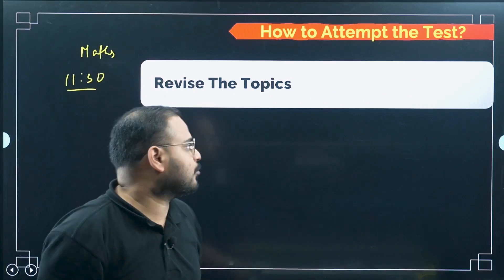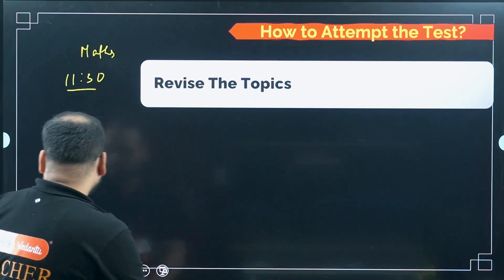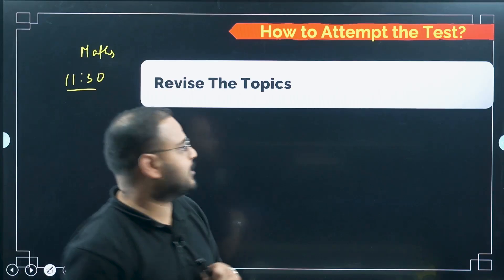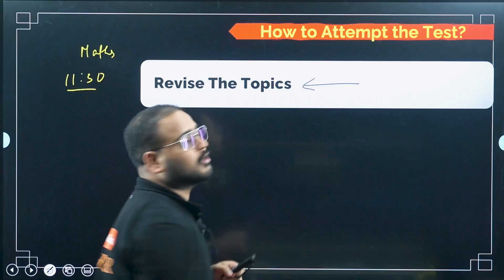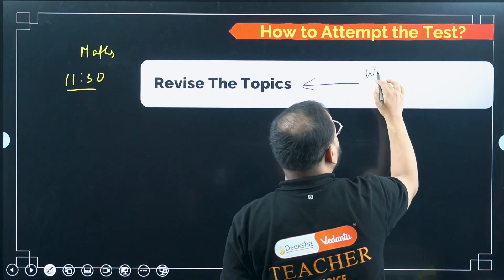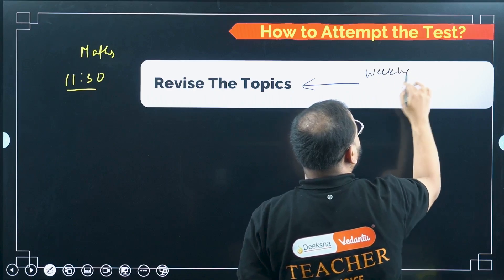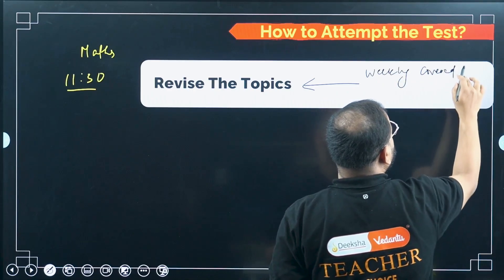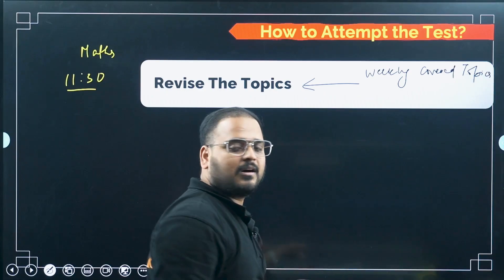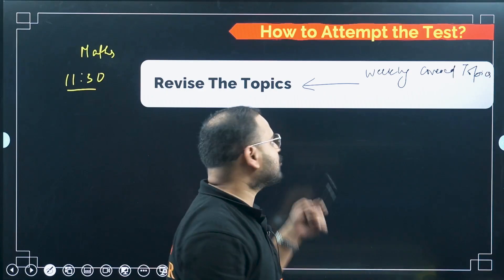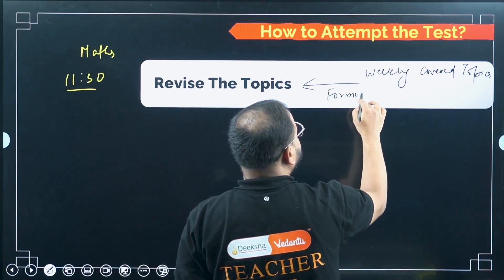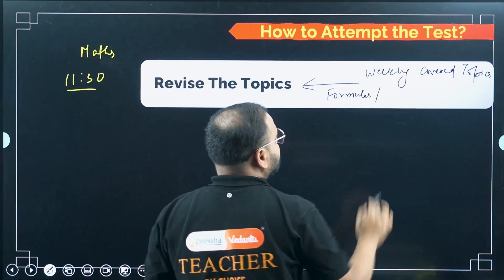How to approach the test? First, you have to do preparation — revision of all the topics covered during the week. Give priority to formulas and basic concepts. You cannot lose marks on formula-based questions. Even if you know the formulas, still revise them. If a question comes directly based on a formula, you should not spend even a single minute solving it — look at the question, one second, write the answer. Know all formulas by heart.